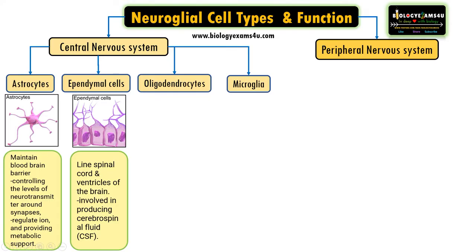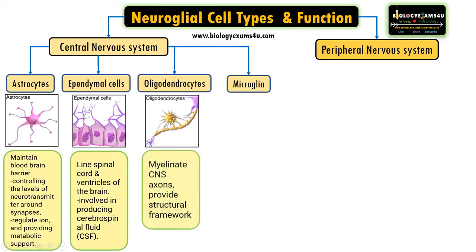The next type is oligodendrocytes. As you can see, they are responsible for myelinating axons. This myelin sheath acts as an insulator, offers protection, and also provides structural support or a structural framework.